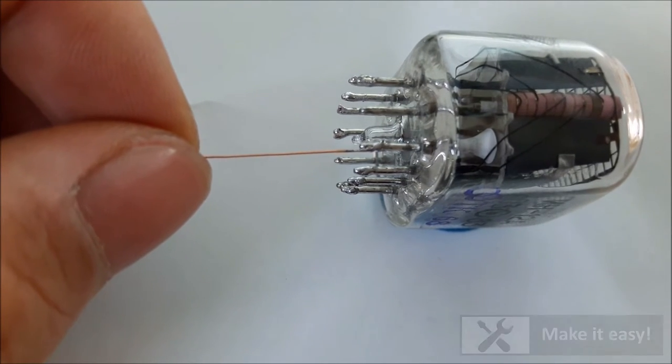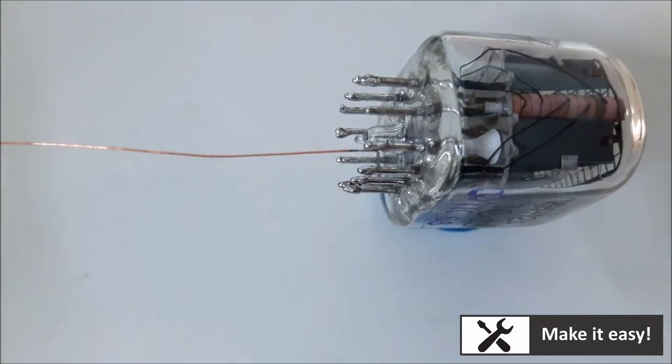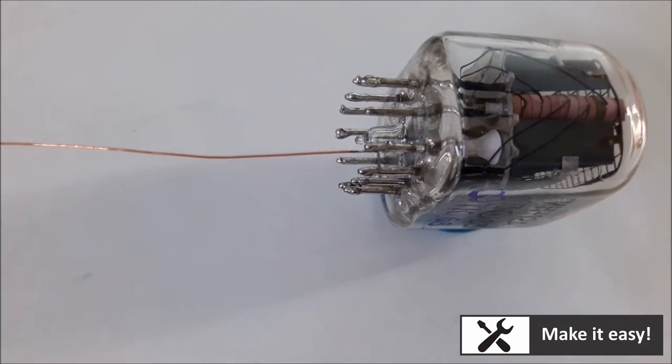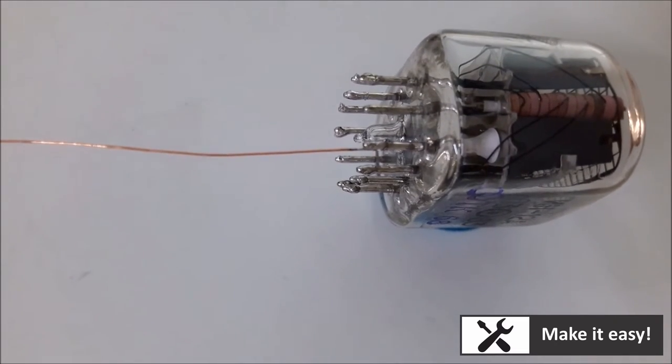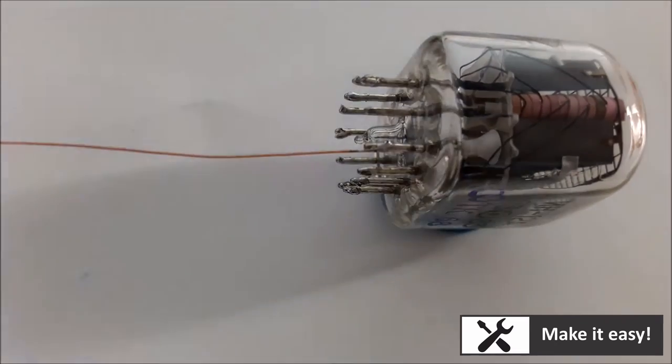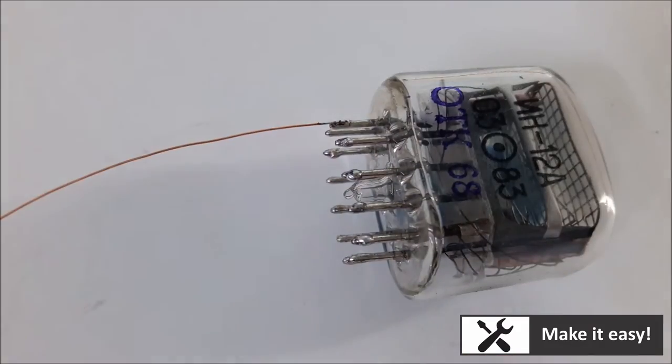Nixitube needs only 0.5mA to light on, so small size of this copper wire can totally support the current. One more thing, copper wire will help to reduce cable size and also easy to be laid out.